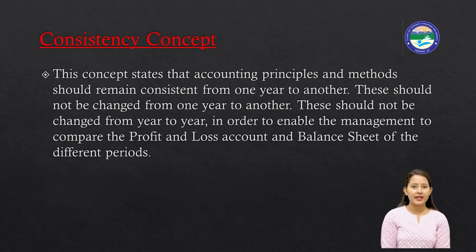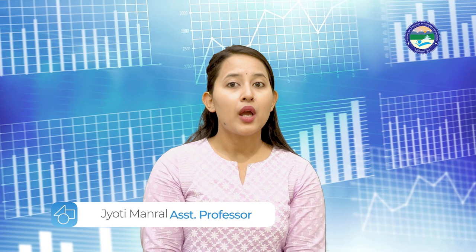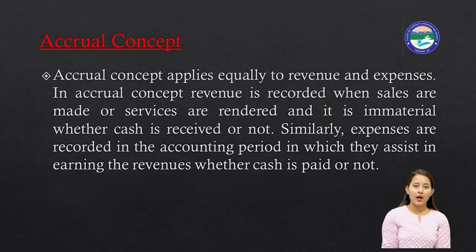For example, there are various methods of calculating depreciation, like the straight line method and diminishing value method. If a firm adopts the straight line method in the first year and then decides to change to the diminishing value method in the second year, that is a wrong practice. The firm should follow the same method for all years, because if you want to compare your balance sheet or profit/loss across years, you need a consistent basis for comparison.